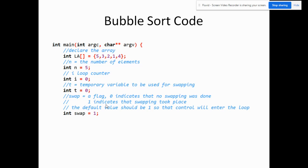Let's examine the code. Here we have the declaration of the array and the elements. We have 5 elements. n represents the number of elements, so integer n is equal to 5. i is the loop counter starting at 0. t is the temporary variable used for swapping. And we have the swap flag — 0 indicates no swapping was done, and 1 indicates that swapping took place.